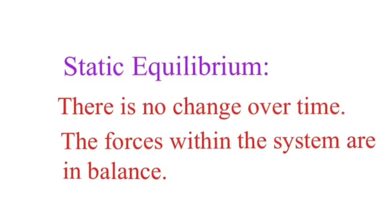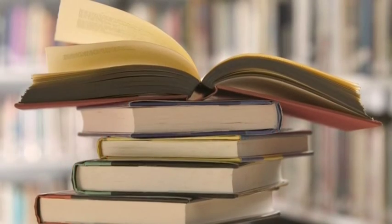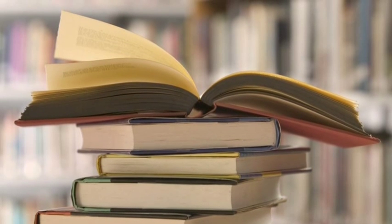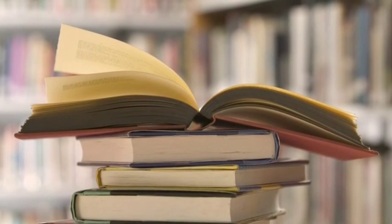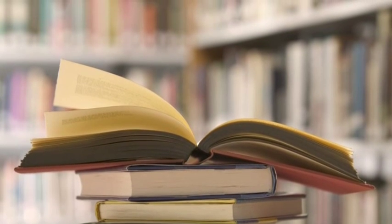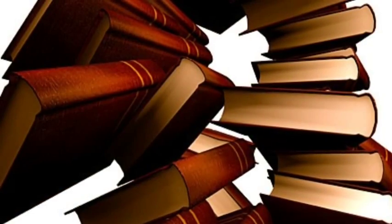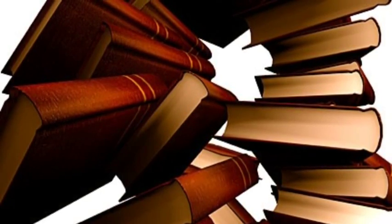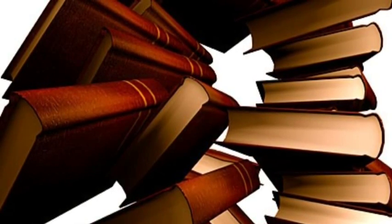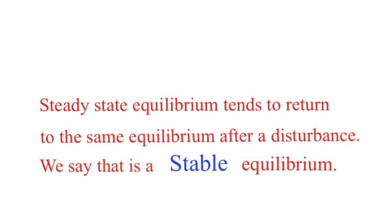In contrast, we have static equilibrium. There's no change over time, and the forces are in balance. If nothing comes along to disturb it, this system's not going to change — it's in perfect equilibrium. So this stack of books will stay just like this for 10,000 years unless some outside force knocks it over, like a big wind or a kid bumping into it. When somebody does knock it over, it goes to a new equilibrium. It doesn't bounce back to the original state — now it's in a new state. So steady state goes back to the original equilibrium; static equilibrium doesn't — it goes to a new one.